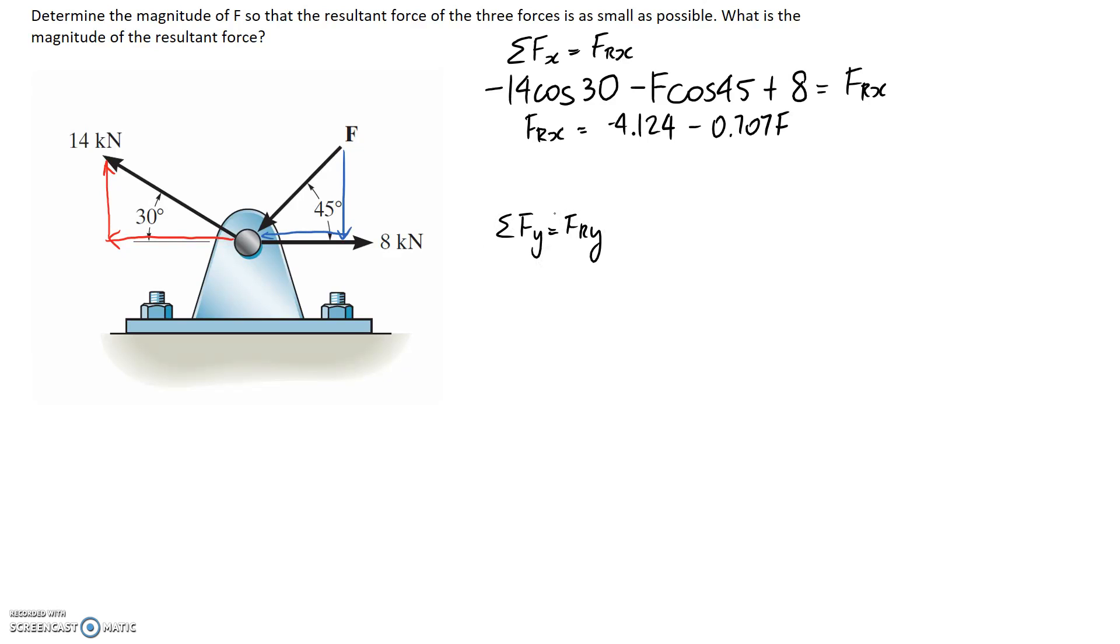Alright, so now we can repeat this for the y direction. Let's again start with the 14 kilonewtons, so it's going to be 14 sine 30, the opposite side, and it's pointing in a positive y direction, so we'll leave it as positive in the equation. And this one here, the f one that we're trying to determine, its y component is going to be f sine 45, and it's pointing downwards, so it's going to be negative. This one doesn't have any component in the y direction, so it doesn't appear in the equation. We can equate it to the y part of the resultant force.